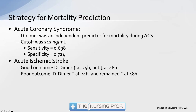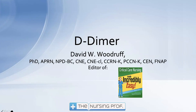In acute ischemic stroke, a good outcome was associated with D-Dimer being elevated at 24 hours but decreased by 48 hours. If D-Dimer was elevated at 24 hours and remained elevated at 48 hours, that was associated with a poor outcome. Good outcomes were associated with the clot being broken down early and reperfusion. Thank you for joining me for D-Dimer. My name is David Woodruff. Until next time, bye now.